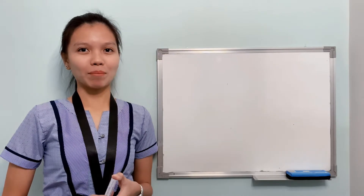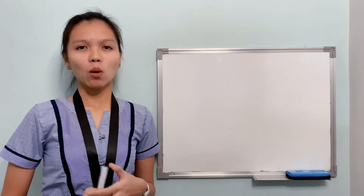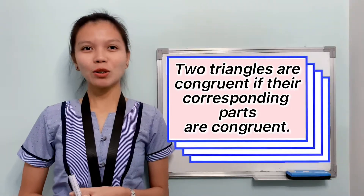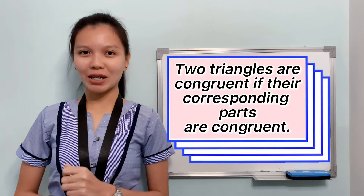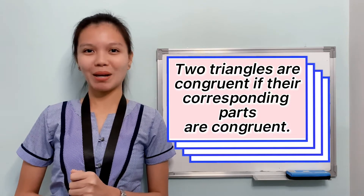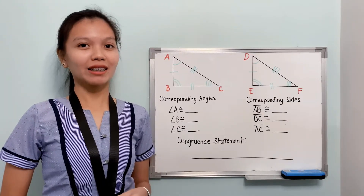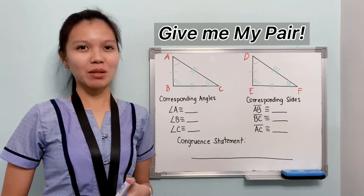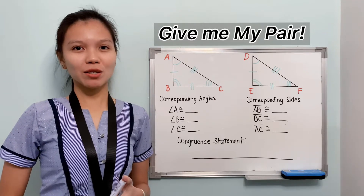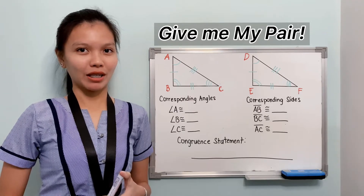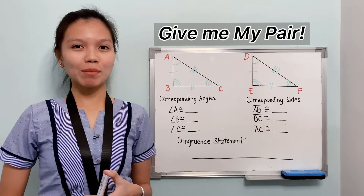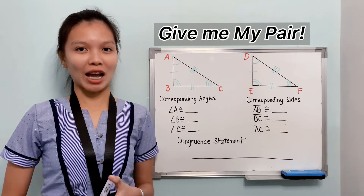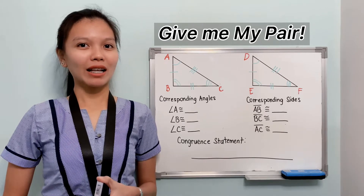Let us recall the concept of congruent triangles. When do we say that the two triangles are congruent? We can say two triangles are congruent if their corresponding parts are congruent. Let us have an activity entitled "Give Me My Pair." We are going to fill in the missing correspondence of the parts of the triangles. You can write your answer on a separate sheet of paper. You can pause this video for some time to write your answers, then continue watching after answering.